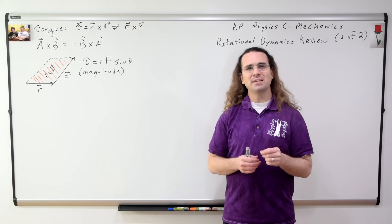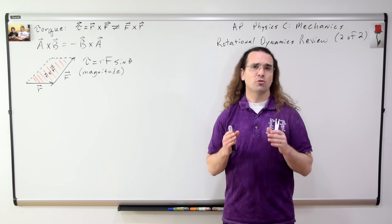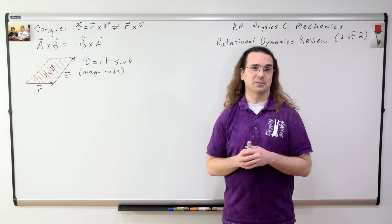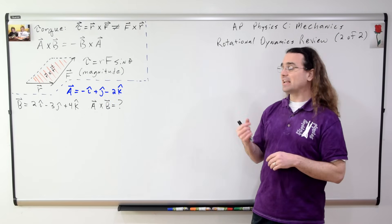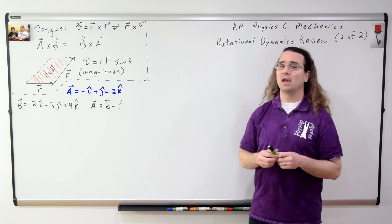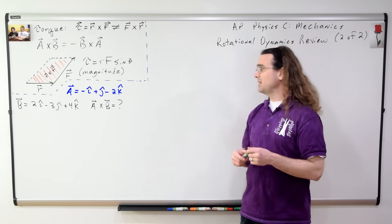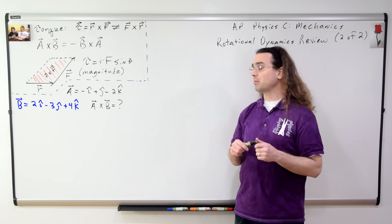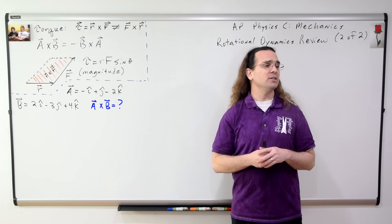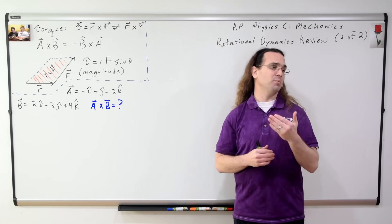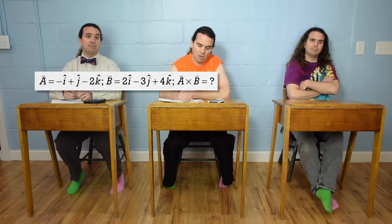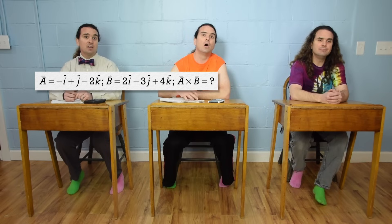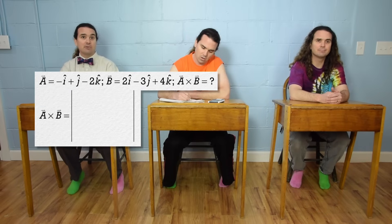And now let's do a basic example to review cross product with unit vectors. Vector A is negative i plus j minus 2k. Vector B is 2i minus 3j plus 4k. Billy, please work out A cross B. Well, the cross product is the determinant of a matrix. This time, because we have three dimensions — x, y, and z — we have a 3 by 3 matrix.